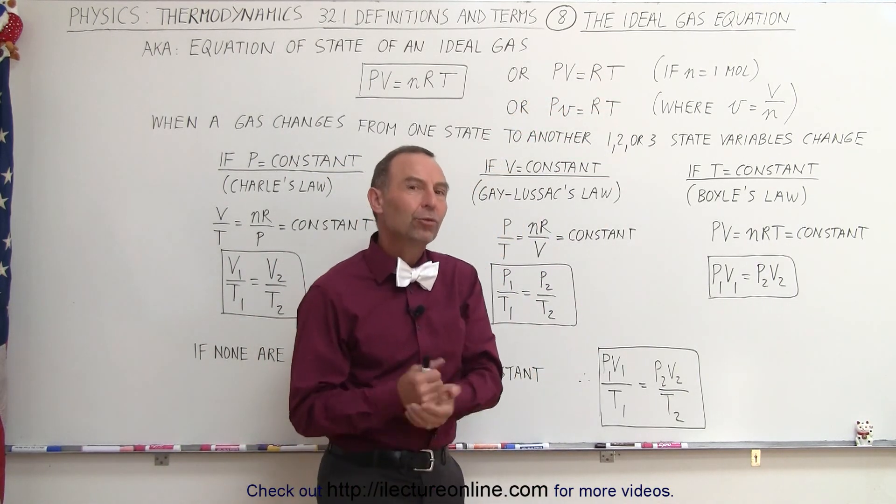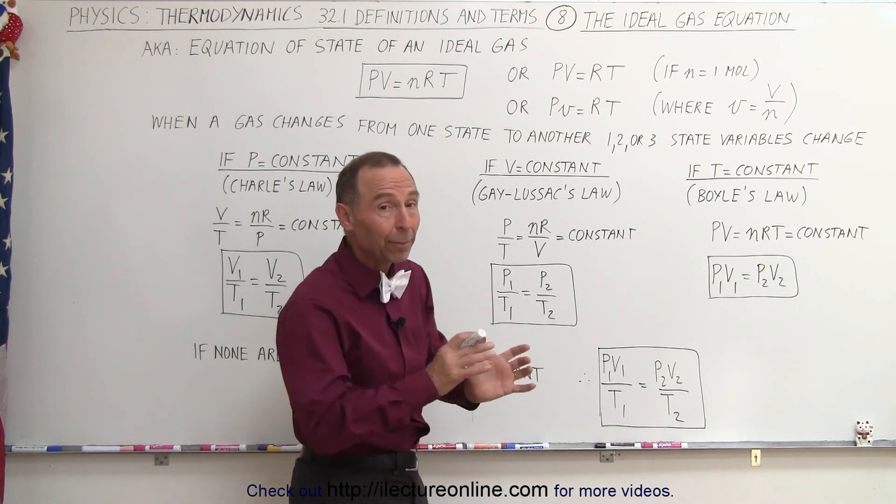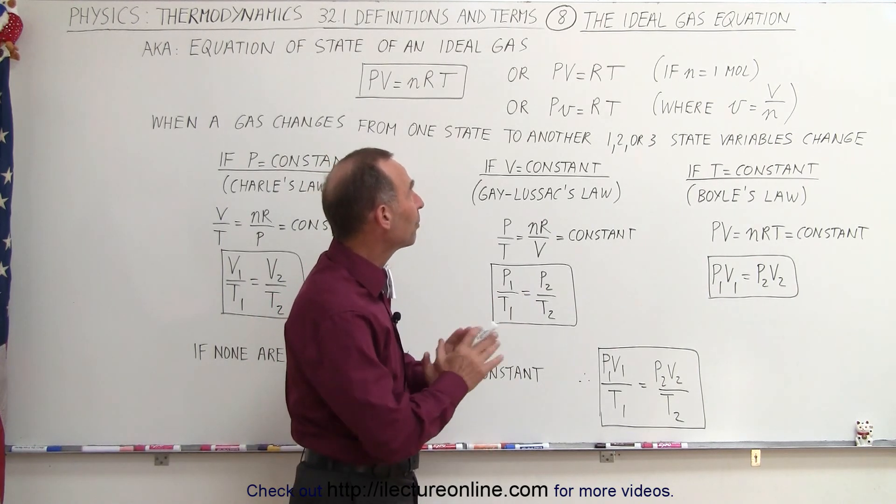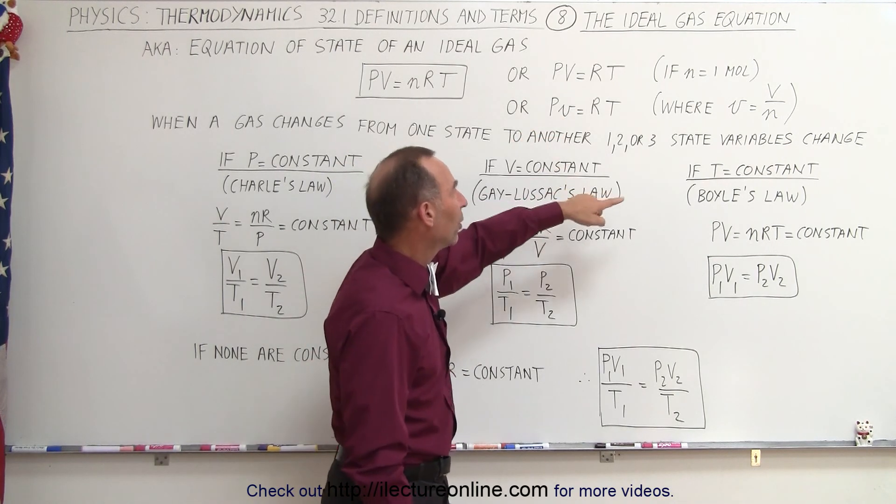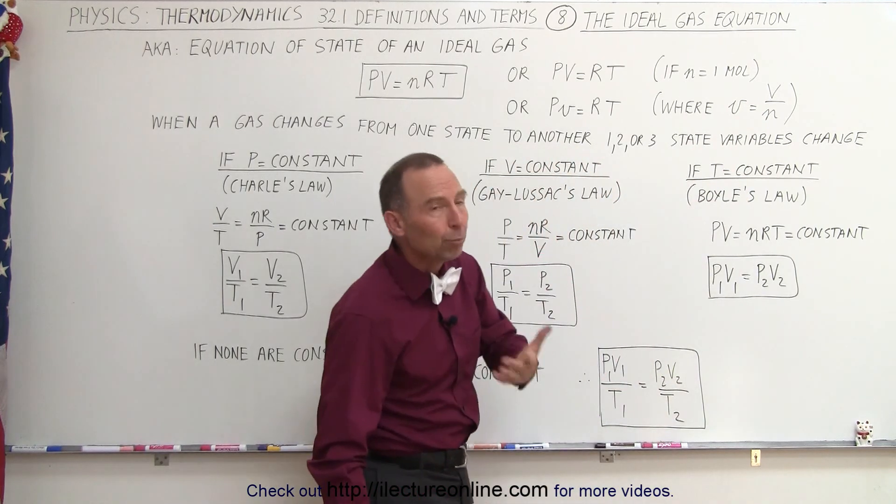Some textbooks do that sometimes. You don't always read the small print or the text and you don't realize what happened to the n. It simply means n equals 1. We'll ignore it for now. PV equals RT. Or sometimes it's written with a small v because they let small v equal the volume divided by the number of moles to make it mole independent.